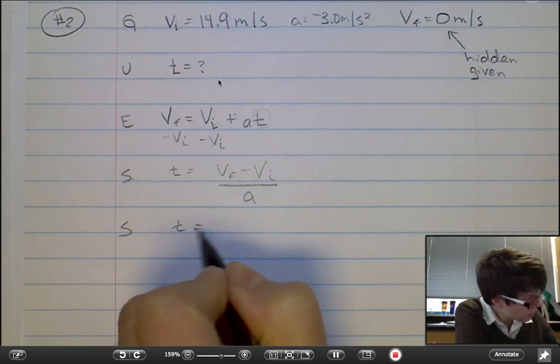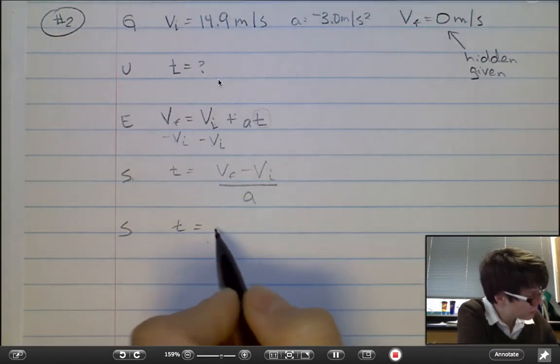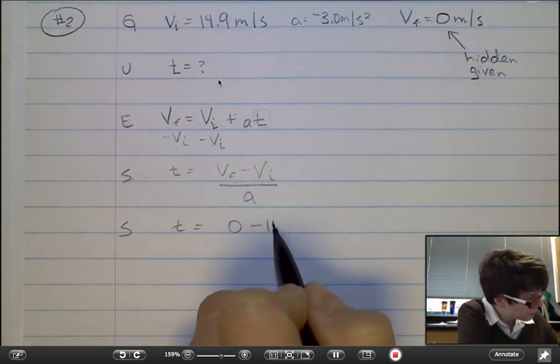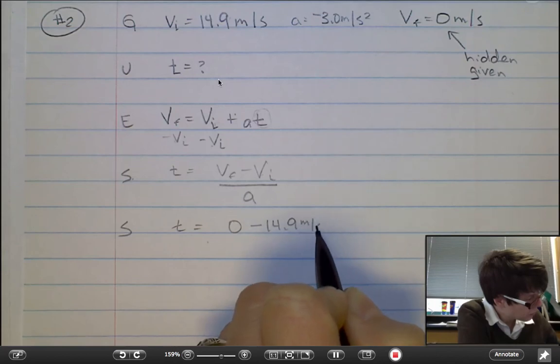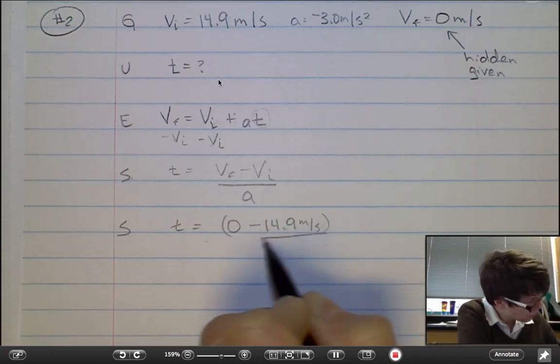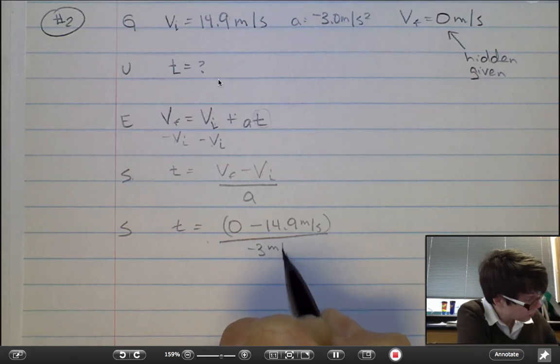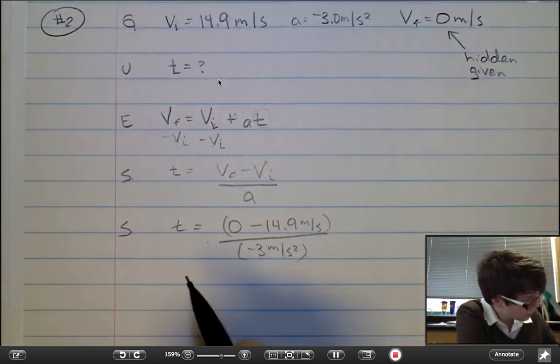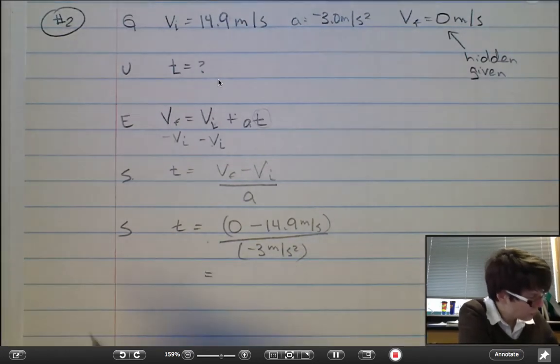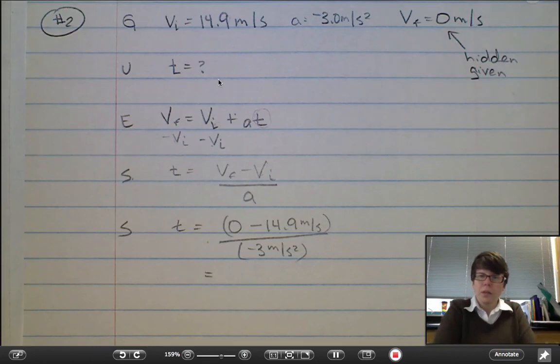Substitute in some numbers and pick up your calculator. And there you have how long in seconds it'll take your snowmobile to come to a complete stop.